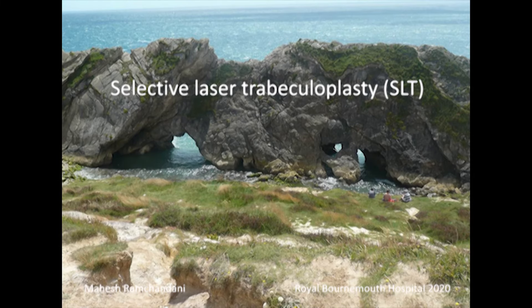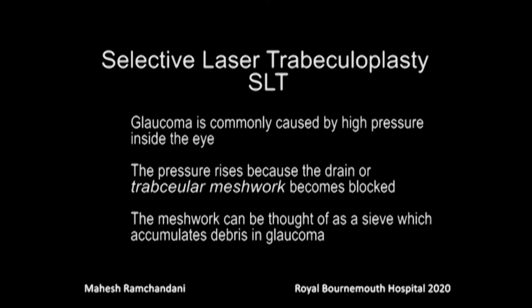Most types of glaucoma arise because the fluid or aqueous humour that the eye produces internally cannot drain, resulting in high pressure inside the eye. This fluid is different from tears which are on the outside of the eye, helping to lubricate it. The fluid cannot drain properly because there is increased resistance to the flow of fluid in the trabecular meshwork, the drainage apparatus of the eye.